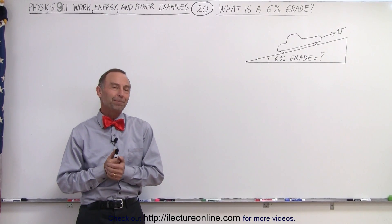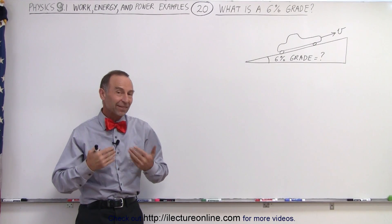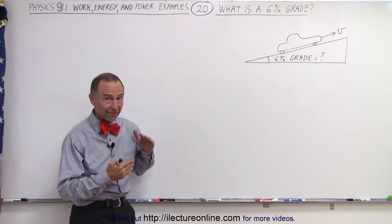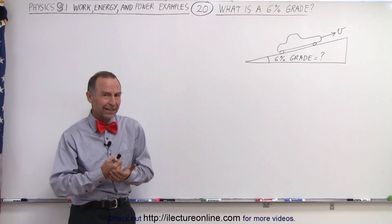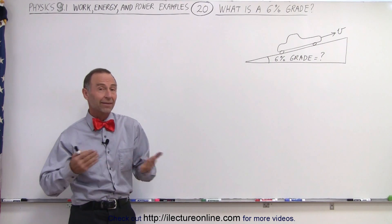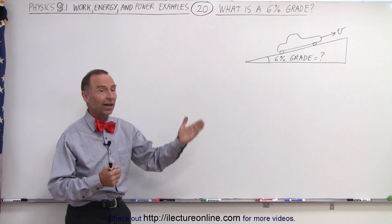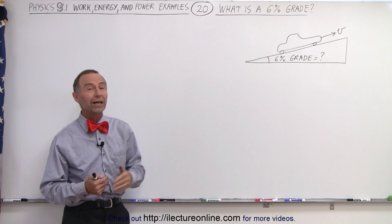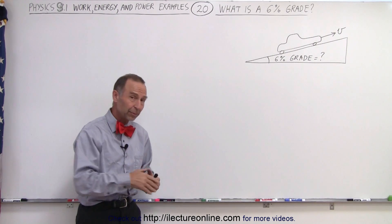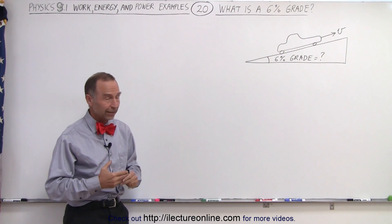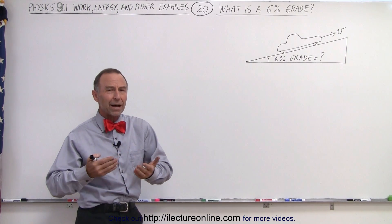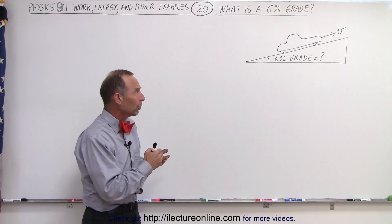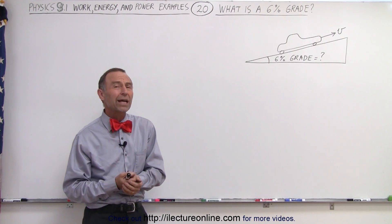Welcome to our lecture online. Before we do our next several examples about a car driving up an incline, we're going to explore the concept of a percent grade. A lot of times you're driving on the highway and you see a sign saying danger 6% grade, especially when it's a downhill because big trucks need to be careful not to get into a runaway situation.